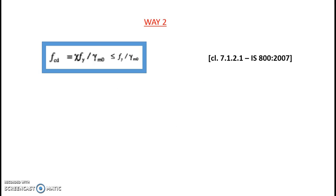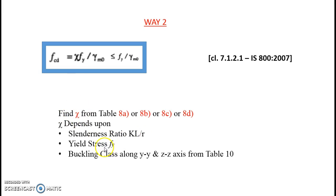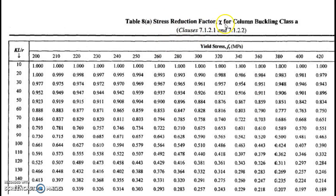Way 2: F_CD = χ × F_Y / γ_m0, from the same clause. The only unknown is χ (chi), which depends on kL/r, F_Y, and the buckling class. For buckling class b, go to Table 8b; for class a, go to Table 8a. In Table 8a, the stress reduction factor χ is tabulated — rows give F_Y (typically 250 MPa for grade 410 steel) and columns give kL/r. For example, if kL/r = 70, χ = 0.803. Interpolate if the value falls between two entries.